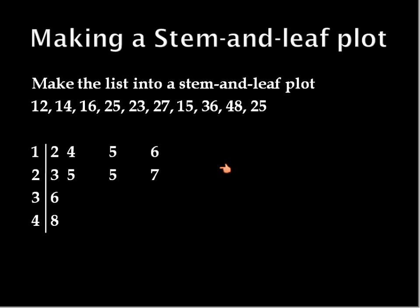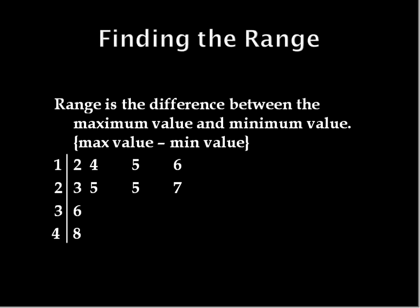Now, some things you can do with a stem and leaf plot now that you have them in order are that you can find the range. The range is just the difference between the maximum and the minimum values. So in this case, we have our maximum value, 48, and our minimum value of 12. We would take the maximum value of 48 minus 12 and get 36. That would be our range. In other words, there's a difference of 36 between the lowest number and the highest number.